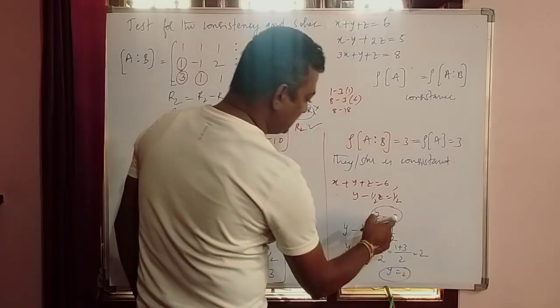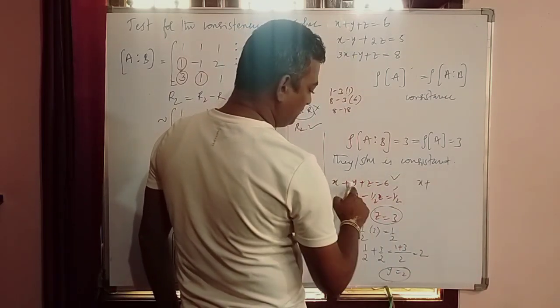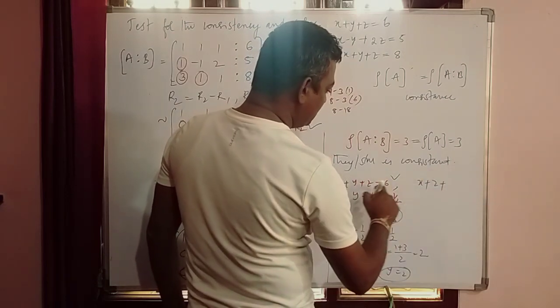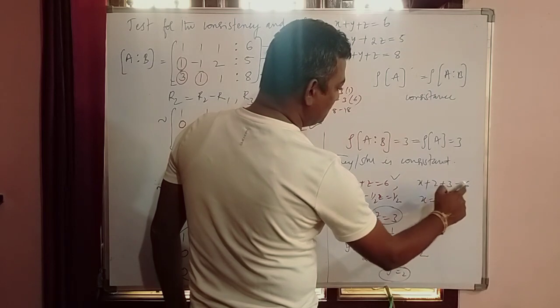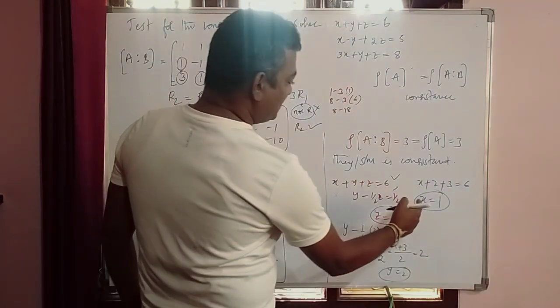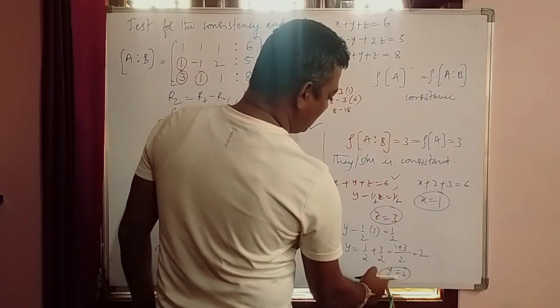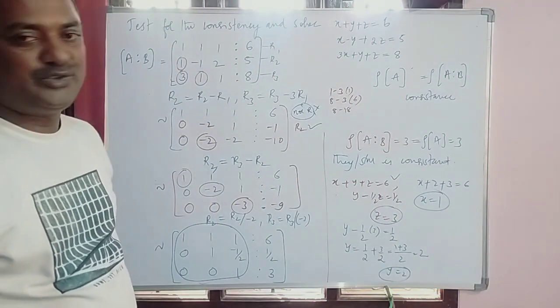If z = 3 and y = 2 in first equation, so x + y is 2, that is x + 2 + 3 = 6. Then x = 6 minus 5 is 1. So what are the values of x, y, z? x = 1, y = 2, z = 3 are the solutions.